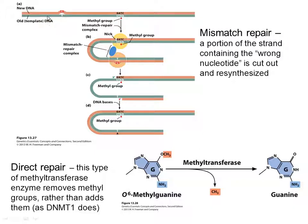An enzyme comes in and cuts out one strand and re-synthesizes it. The key question is whether the enzyme removes the new strand or the template strand. This is resolved by looking at which strand is methylated. Typically cytosines get methylated as a normal part of DNA regulation. Whichever strand has the methyl groups is assumed to be the template, so only the new under-methylated strand is cut. That segment is removed and re-synthesized using the polymerase enzyme. That's mismatch repair.